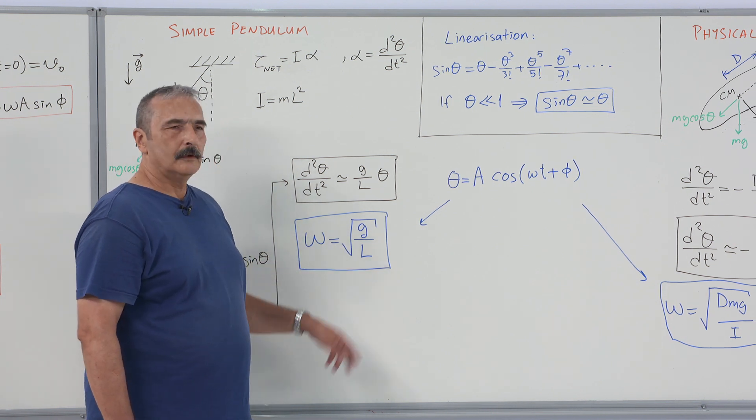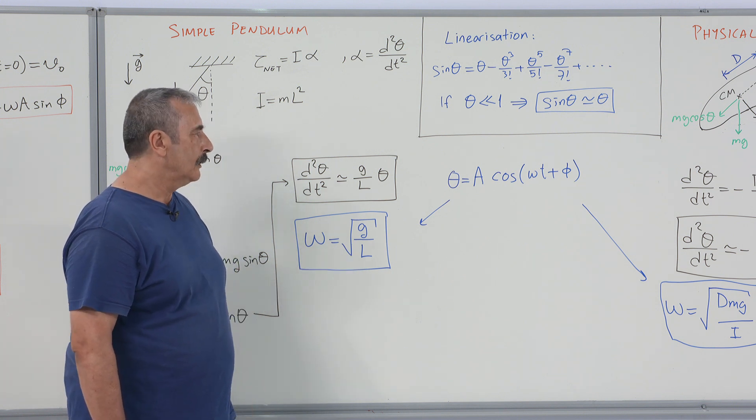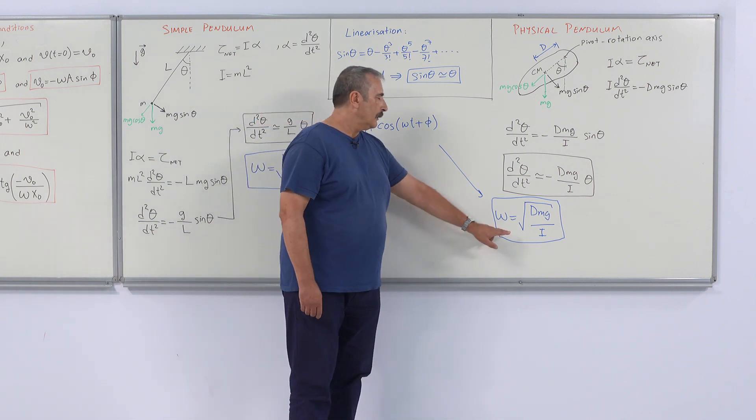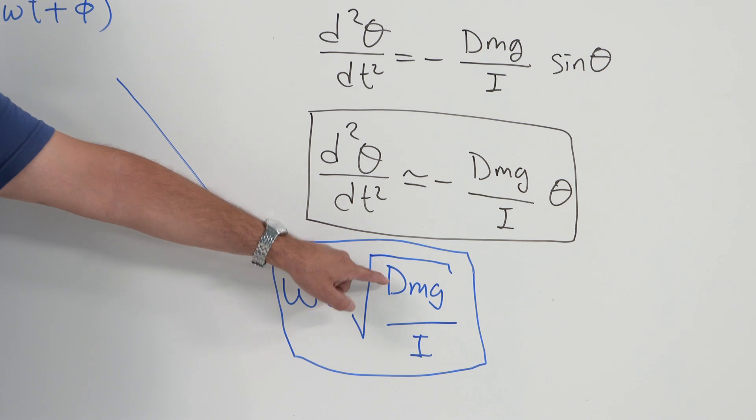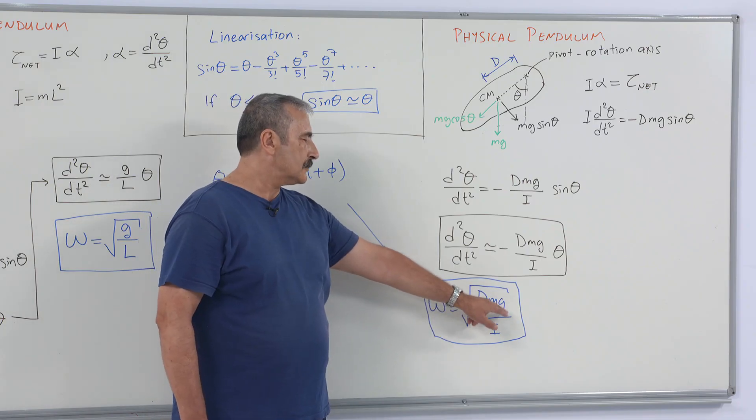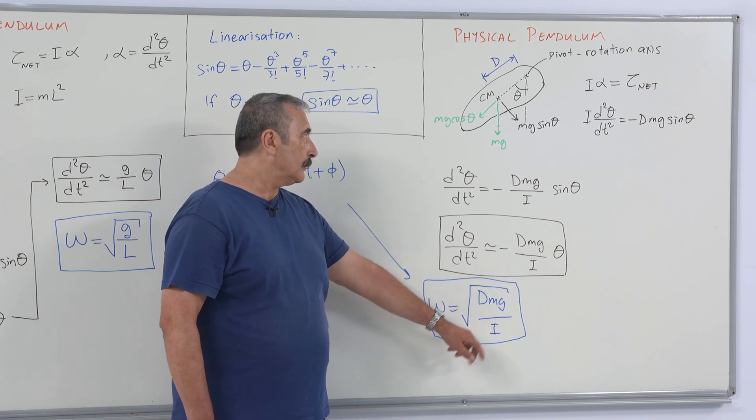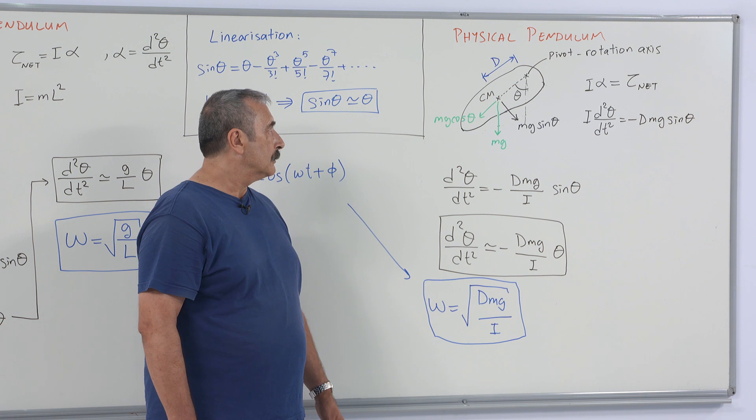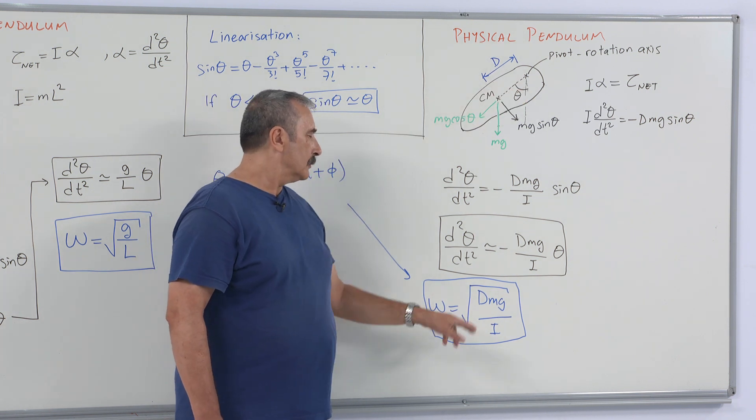Of course, it reveals the period and the frequency of the motion. And also, for the physical pendulum, we have angular frequency, root squared d, distance between the center of mass and the pivot times mass times g acceleration due to gravity divided by moment of inertia of the rigid object with respect to this axis.